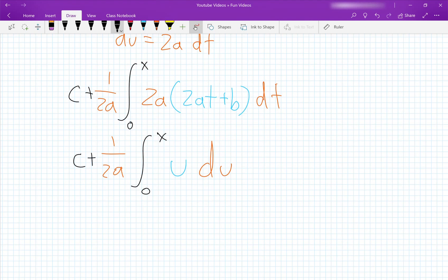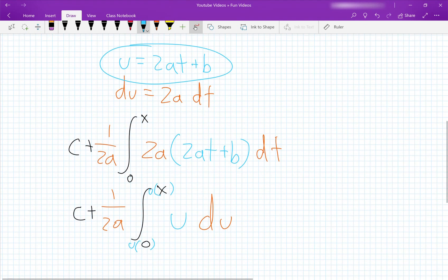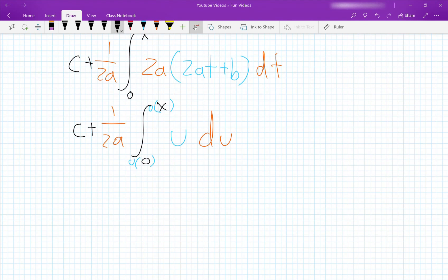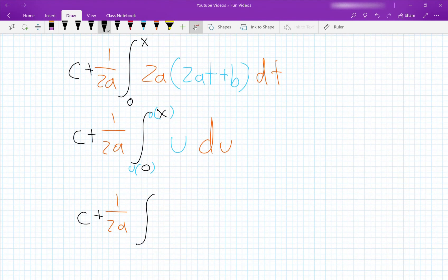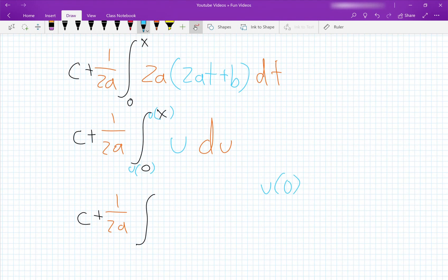So we need to change the limits of the integration to the u world as well. So we can do this by plugging them into our u function, which is 2at plus b here. So let's rewrite this as c plus 1 over 2a of the integral. So when t is equal to 0,